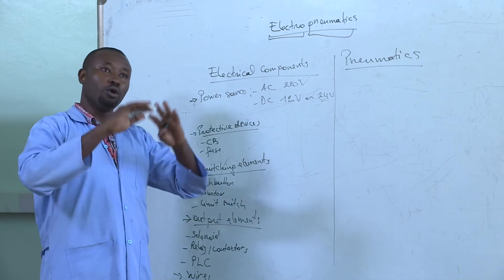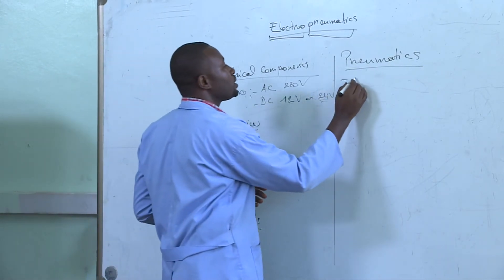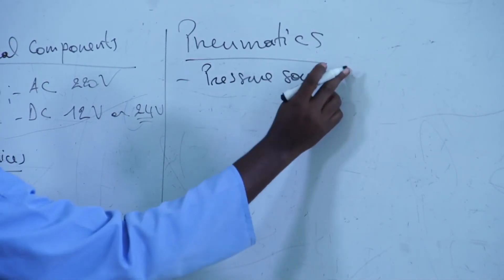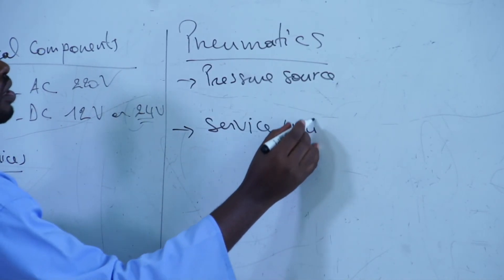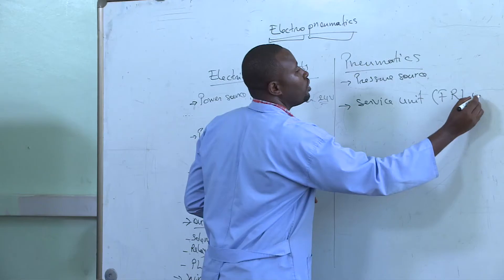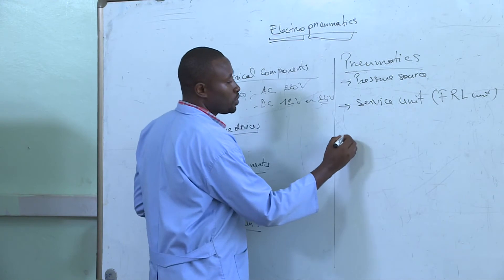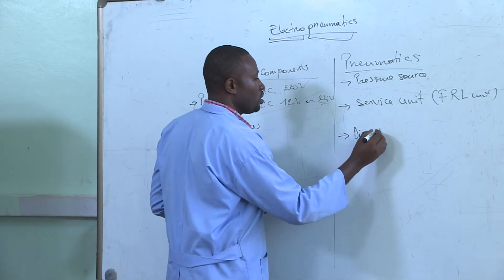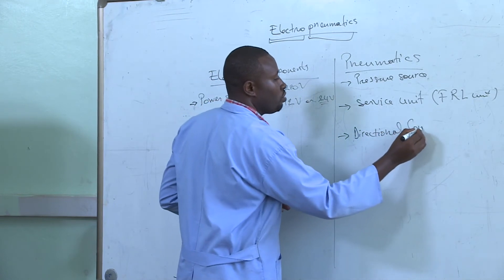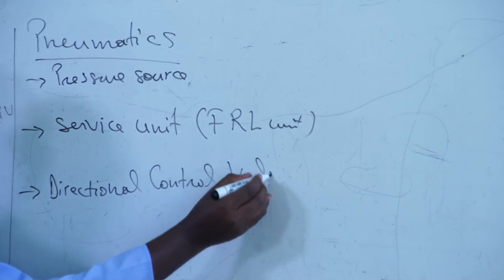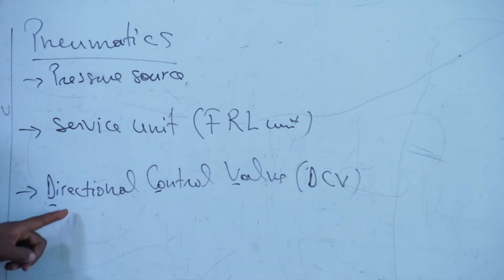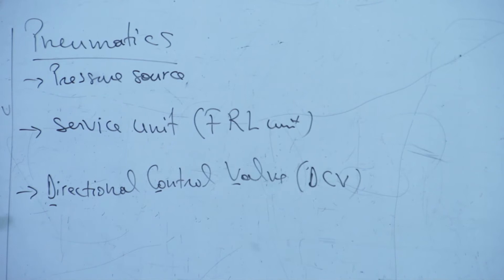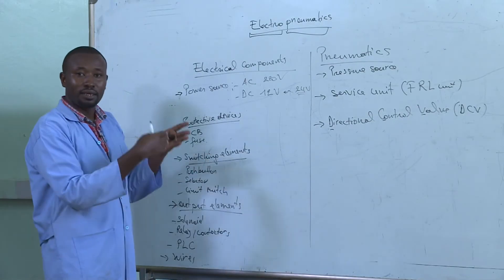On the pneumatic side we will need a pressure source. We will also need a service unit, also known as an FRL unit. We will also need a directional control valve, also known as a DCV. The directional control valve is electrically controlled by the solenoid, so the connection between the electrical and the pneumatic sides will be done at the directional control valve.